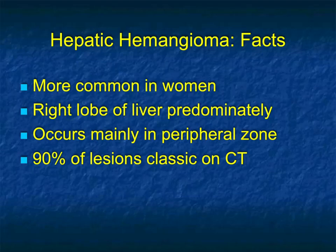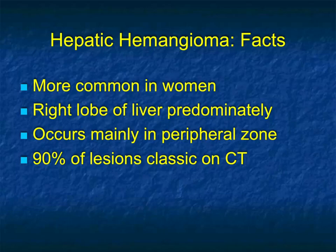Hemangiomas are one of the most common liver lesions we see, and in probably 90% of the time, we can be very specific as to its etiology. Hemangiomas have no malignant potential and essentially can always be left alone. Occasionally, hemangiomas can be very large — as large as 15, 20, or even 25 centimeters — and then just because of mass effect, they may be resected, but that's a very unusual scenario.